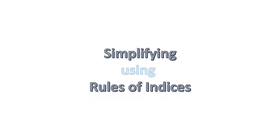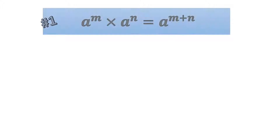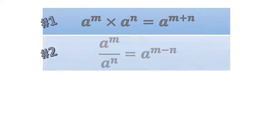First of all, we need to know what rules apply for Grade 9. The first rule: if the bases are the same and they are multiplied with different powers, the powers are added together. So a to the power of m times a to the power of n equals a to the power of m plus n.